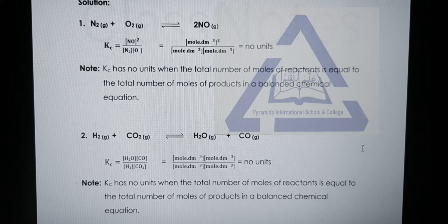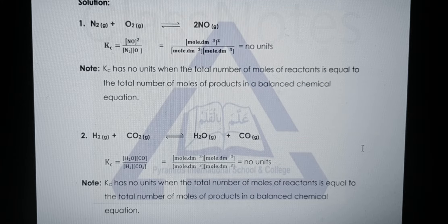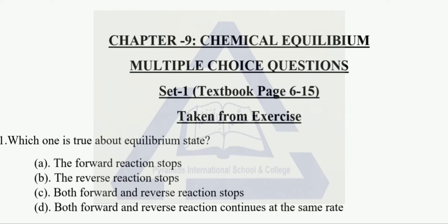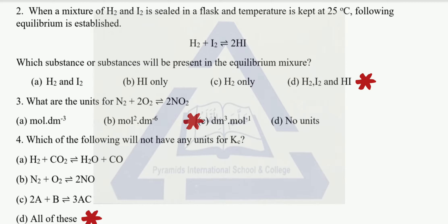Let's move on to the exercise MCQs. Open your books and mark the correct options. Number one — which one is true about equilibrium state? Option D is correct: both forward and reverse reactions continue at the same rate. Number two — when a mixture of hydrogen and iodine is sealed in a flask at 25°C, which substances are present in the equilibrium mixture? Option D is correct: hydrogen, iodine, and hydrogen iodide — all of these are present.